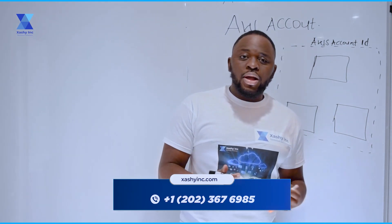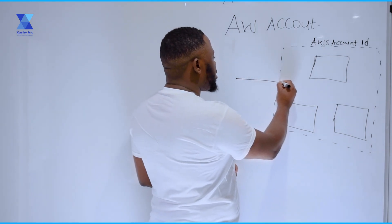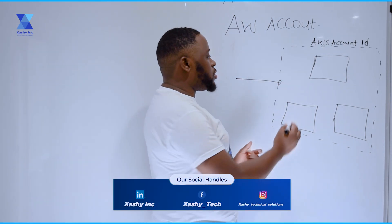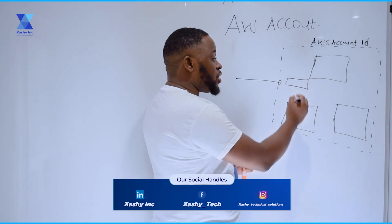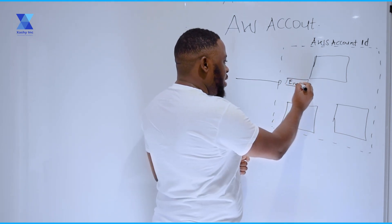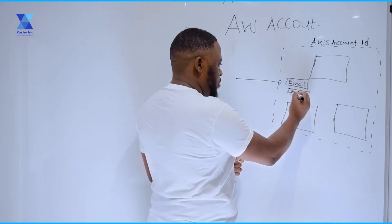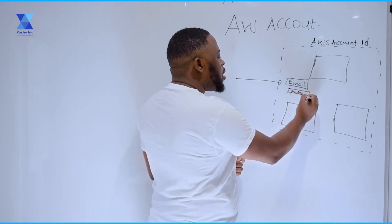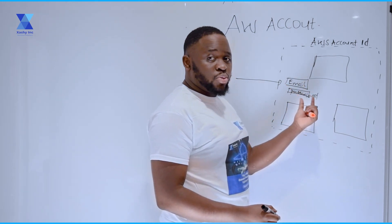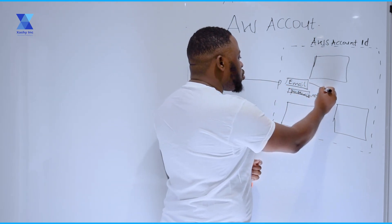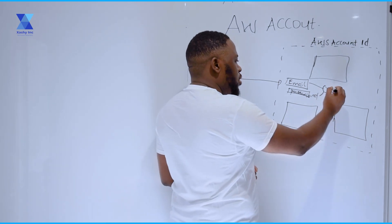When you create an AWS account for the first time — when you actually register an account — you're going to make use of a username, which is actually going to be an email address, and you're going to make use of a password. When you create this account with the email and the password, AWS is actually going to create something known as the root user.